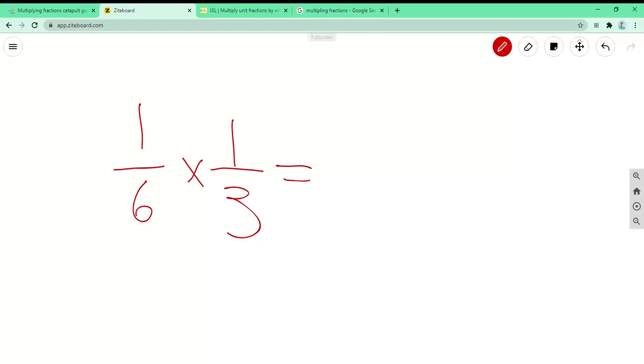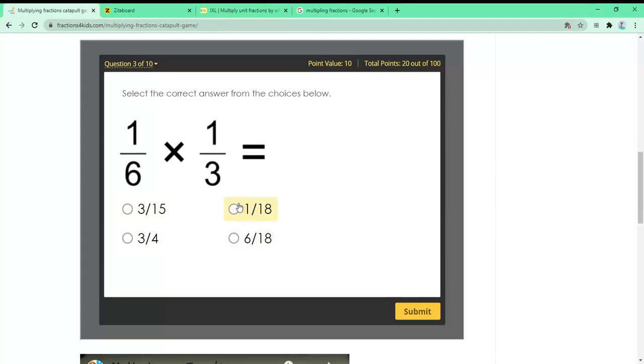So 1 times 1, like we know, is 1 obviously. 6 times 3 is 18. So you cannot divide any number with 1 divided by 18. So you can leave this 1 eighteenth. So the answer is 1 over 18. That's right.